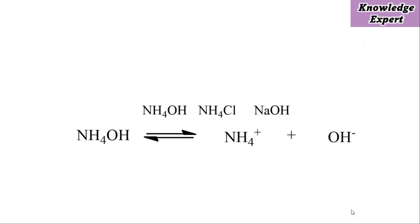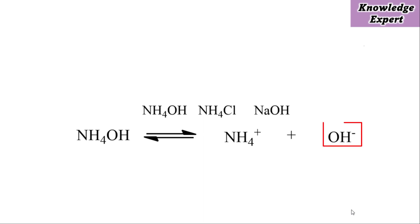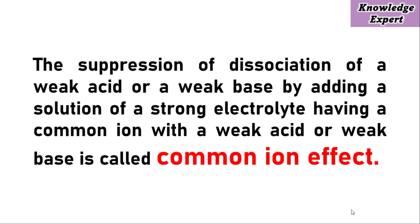Likewise, if we add NH₄Cl or NaOH to NH₄OH, there will be suppression of NH₄OH. If we add NH₄Cl, we will have the common ion NH₄⁺. Or if we add NaOH, we will have the common ion OH⁻. In this way, the dissociation of NH₄OH gets suppressed. In a nutshell, the suppression of dissociation of a weak acid or weak base by adding a strong electrolyte having a common ion is called the common ion effect, as seen with OH⁻, CH₃COO⁻, and NH₄⁺.